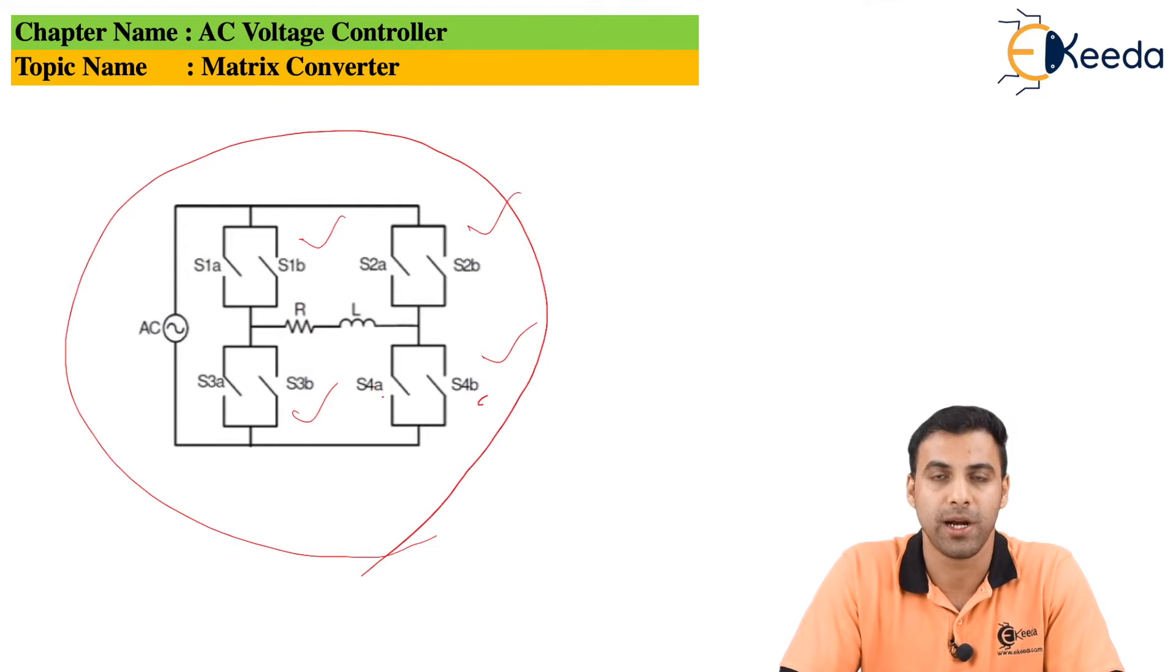These are bidirectional switches, meaning they allow the flow of electric current in either direction. A matrix converter can operate in either direction because of the bidirectional switches, and the output across the load is taken into consideration.